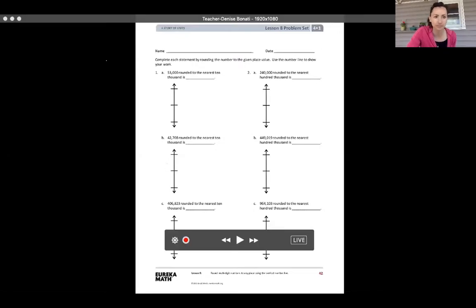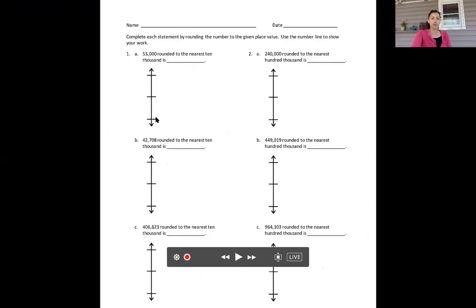Complete each statement by rounding the number to the given place value. Use the number line to show your work. Number 1a says 53,000 rounded to the nearest ten thousand. I know that 5 is in my ten thousands place.